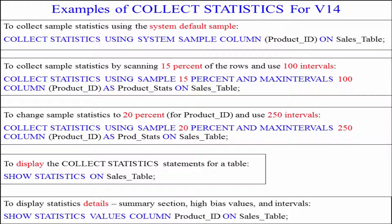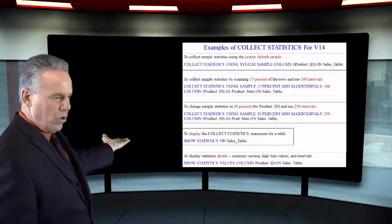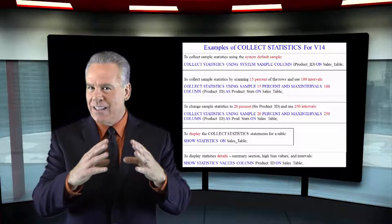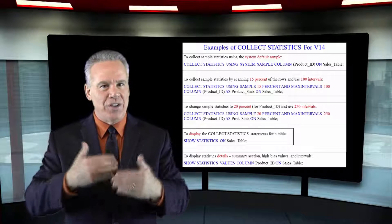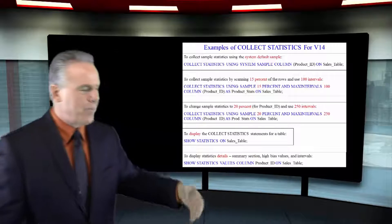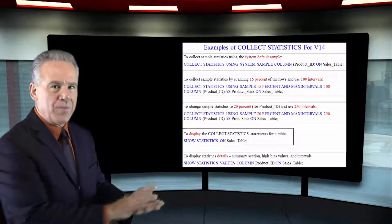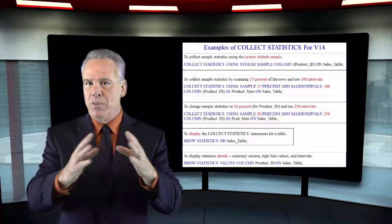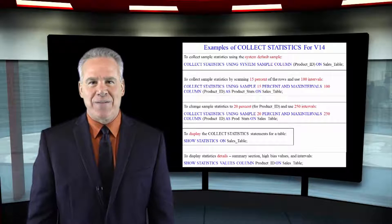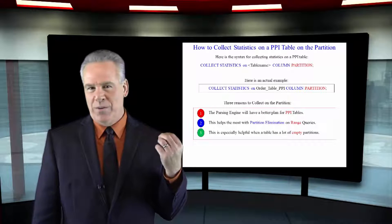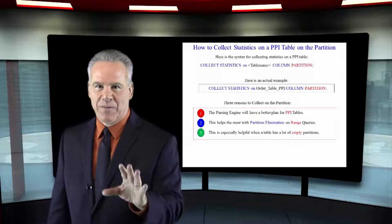And I can also display this by saying show statistics on the table. And it's going to show me exactly what it's been doing. And I'll get some information on this. And lastly, I can say show statistics values for a particular column. And it's going to give me a bunch of more detailed information.